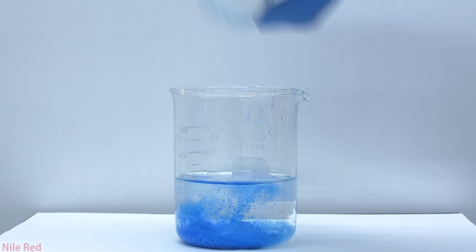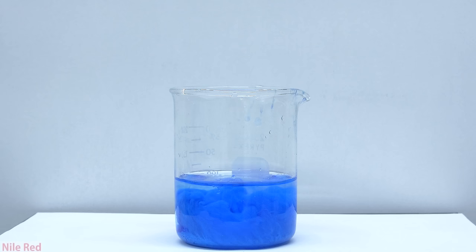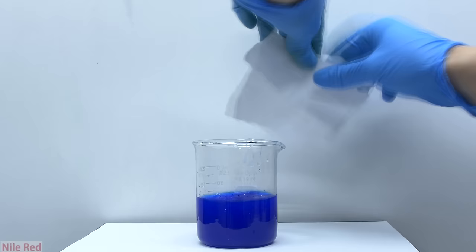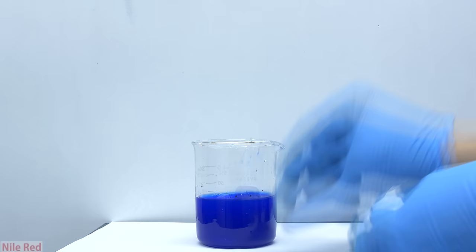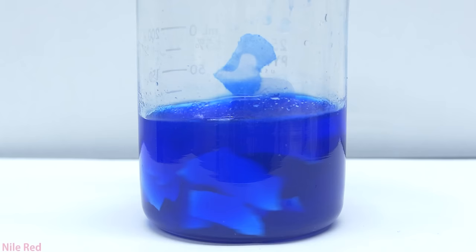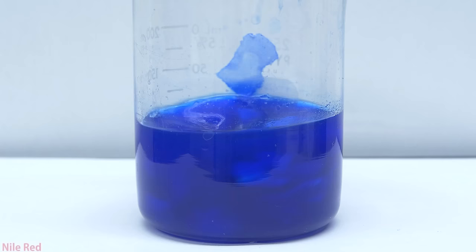I go in to make more Schweitzer's reagent, and I want to test out dissolving different sources of cellulose like paper. I just take some generic white printing paper, I tear it up into smaller pieces, and I throw it into the Schweitzer's reagent. When we initially add the paper, it doesn't really dissolve, and it actually takes quite a long time to dissolve everything. The main reason for this is that compared to the cotton balls, the surface area of the paper is much less, so it just takes a lot longer to dissolve.